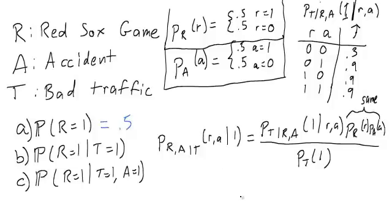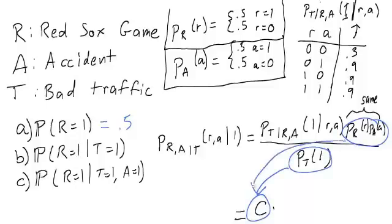So what we can do is take a little shortcut and say that this is not equal to, but is equal to some constant C. Where these things, these terms here, and this term here, we can say that they're constant. They don't depend on R and A.